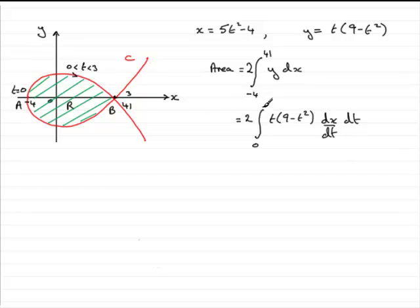So when x is 41, t is equal to 3. And we can just put 3 up in there. Now, how do we change this integral? Well, we need dx by dt. And we can work out what dx by dt is. Let's just go over here. dx by dt is equal to, and if we differentiate this in the usual way, we're just going to get 10t. So we can substitute 10t into this part of the integral.